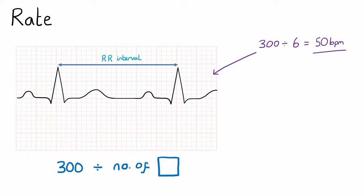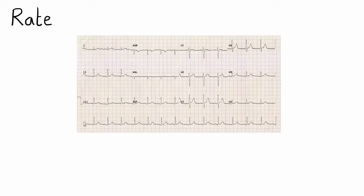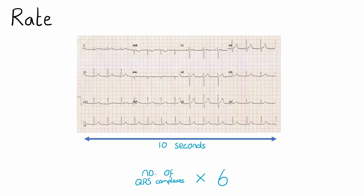This method only works if there's a regular rhythm; otherwise the RR interval will be changing throughout the ECG. In those cases where the rhythm is irregular we need to use the second method. For this we count the number of QRS complexes along the rhythm strip and multiply it by six. This works because the total length of the rhythm strip is 10 seconds, so multiplying it by six gives us one minute.